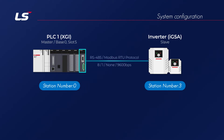The basic parameter settings in PLC drive communication are as follows: Modbus RTU protocol, data bit 8, stop bit 1, parity bit none, communication speed 9600 bps.